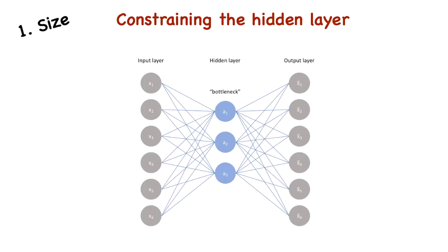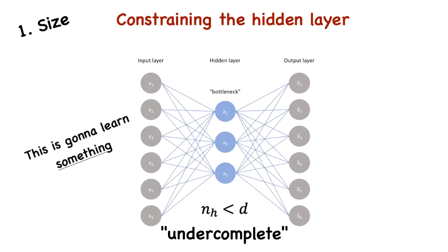Consider size. If the number of neurons in H is less than that of the input layer, the autoencoder is said to be under-complete. This is useful as the network needs to learn latent representations within only a small set of neurons, so we're sure that it's going to learn something.